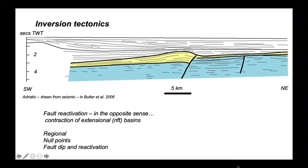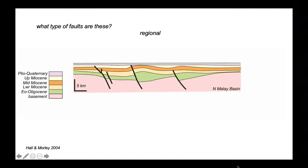Let's look at an example. Here's a cross section through part of the North Malay Basin. At the bottom of the section, we've got basement rocks, overlain by a sedimentary cover, which was deposited from the Eocene Oligocene up to the present day. These units are cut by faults.